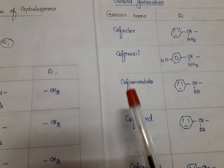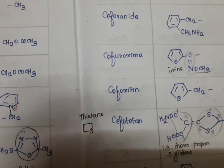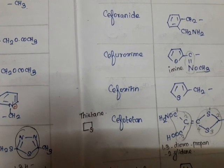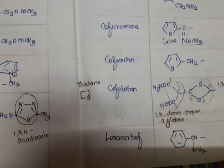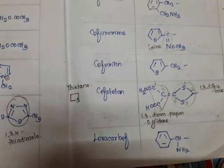The second-generation cephalosporins are: cefaclor, cefprozil, cefamandole, cefonicid, ceforanide, cefuroxime, cefoxitin, cefotetan, and loracarbef.